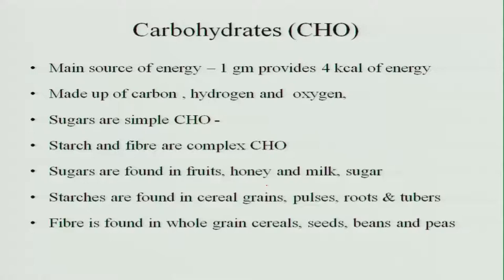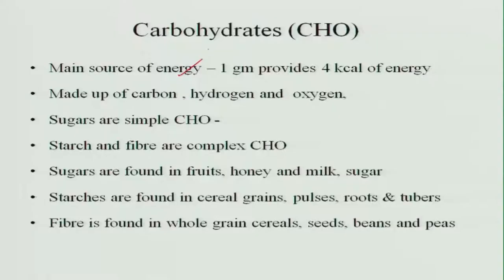The next nutrient is carbohydrate. It is also a major nutrient in the food. The main function of carbohydrates is to provide energy. One gram of carbohydrate provides 4 kilocalories of energy, and carbohydrate is made up of carbon, hydrogen and oxygen. We have simple carbohydrates which are made of sugar, starch and fiber, and complex carbohydrates. So, carbohydrates are divided into simple and complex.